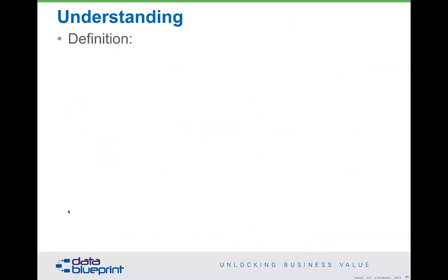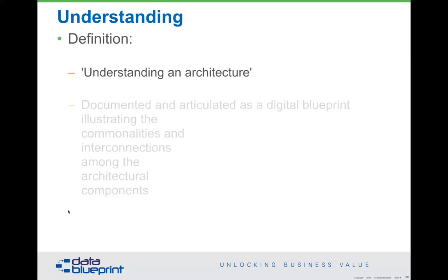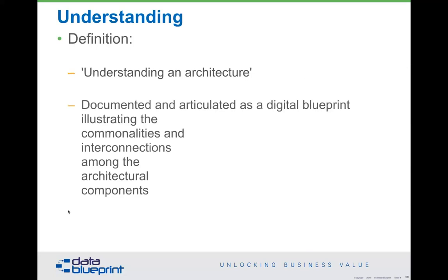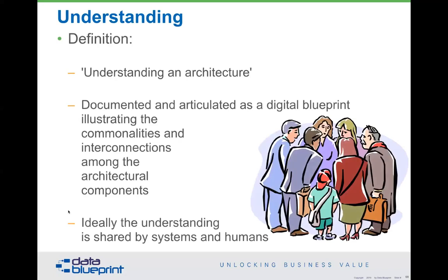The key for the data model is that everybody shares the understanding, and from a dependency perspective, this data model must be specified before we write software. If we don't, we will have to rewrite software or compromise our data model with a less-than-optimal version, which may create 30 billion unnecessary queries in a day. The data model is an architectural component — a digital blueprint. It illustrates the commonalities and interactions among the architectural components, and most importantly, it's shared by humans and computers.